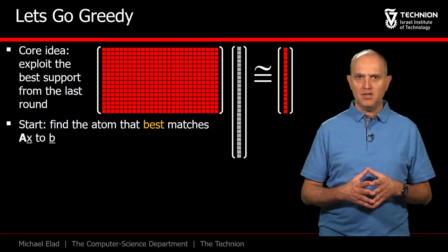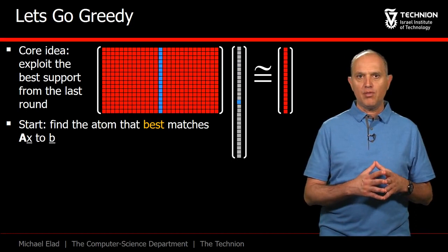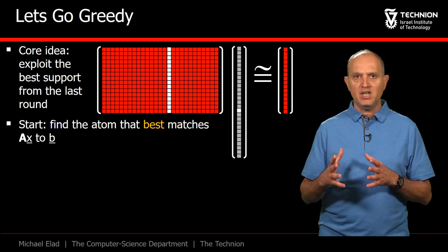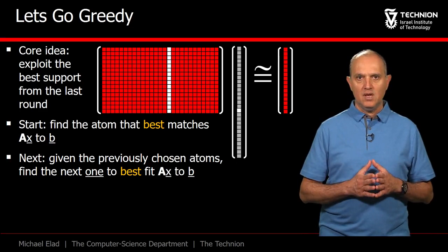We will find the support of X by operating sequentially and gradually. We start by searching the best possible solution with the support of only one atom. This is done by sweeping through all the possibilities and finding the column in A that leads to the best match between AX and B.